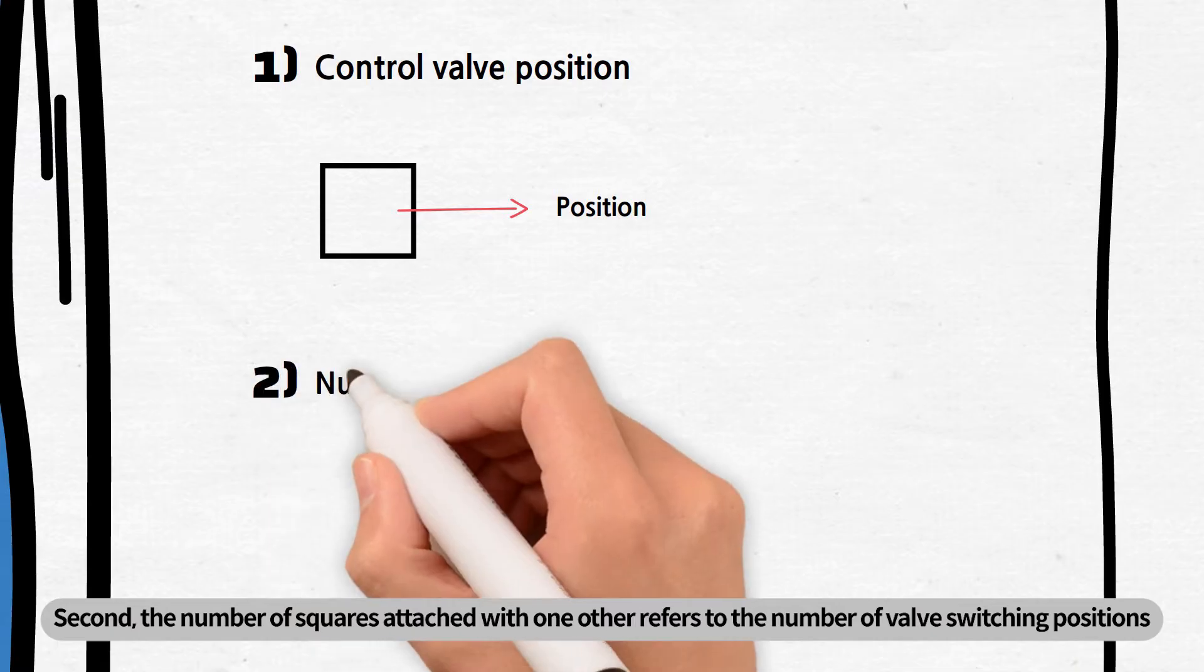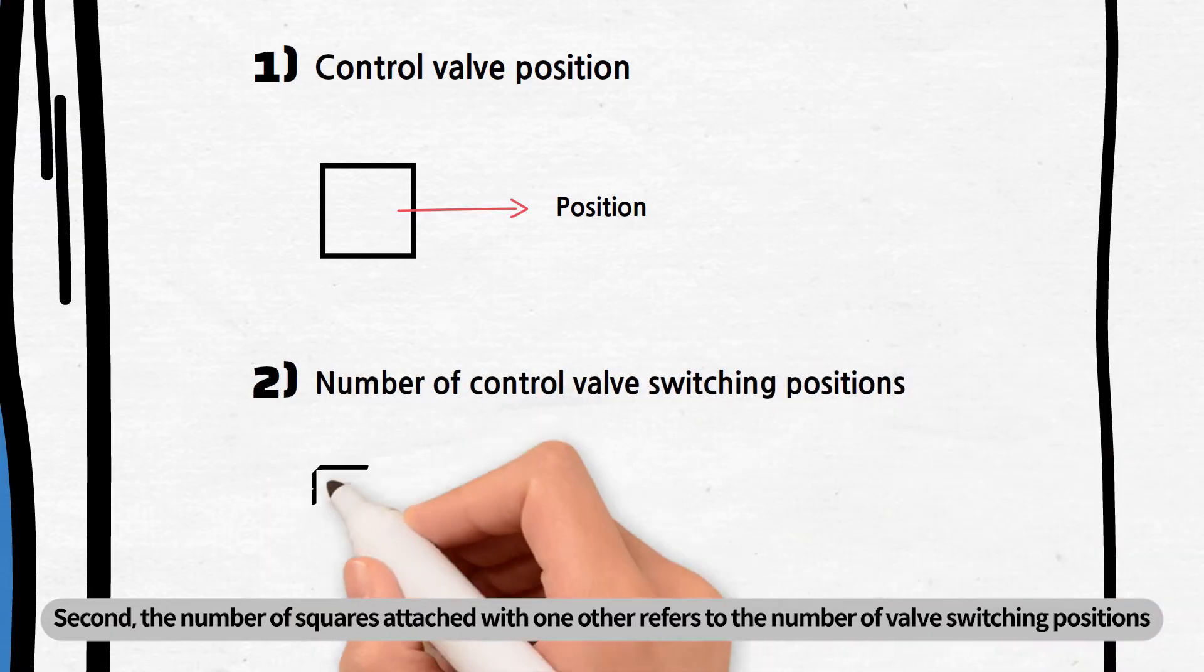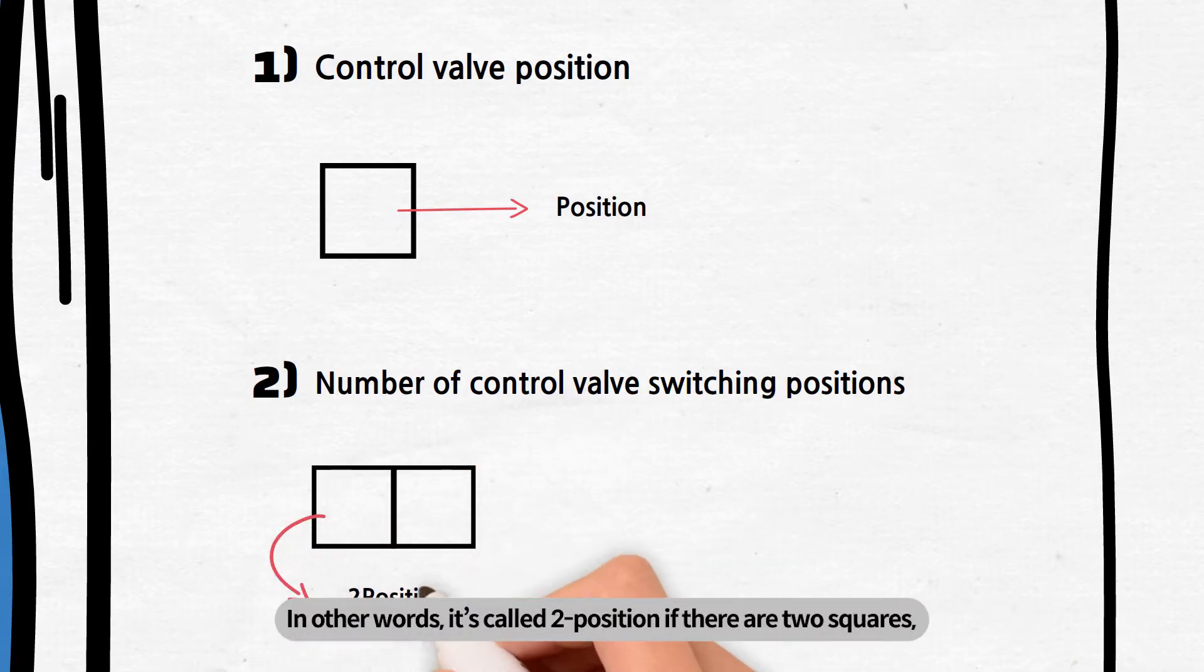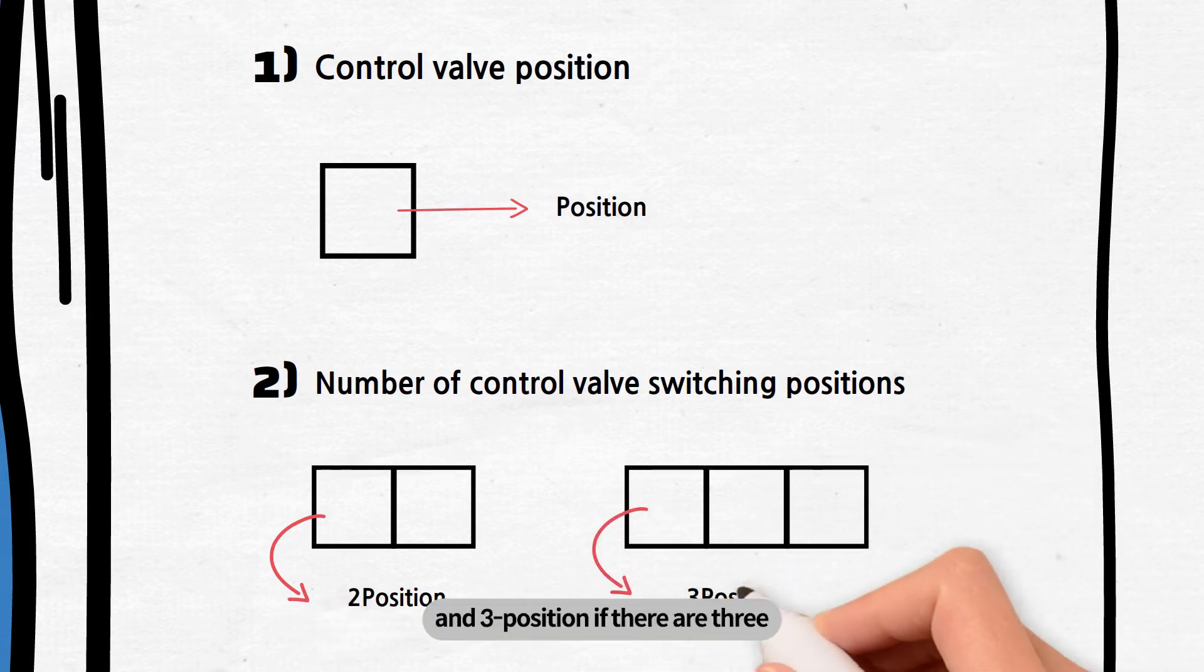Second, the number of squares attached with another refers to the number of valve switching positions. In other words, it's called two position if there are two squares and three position if there are three.